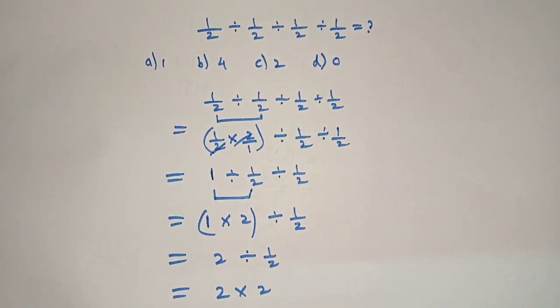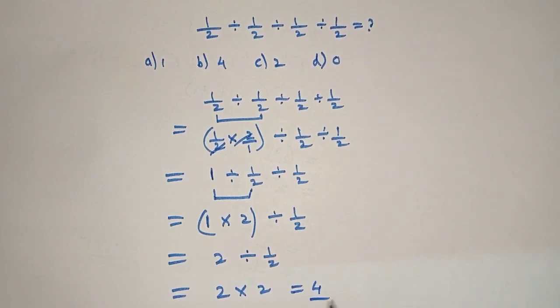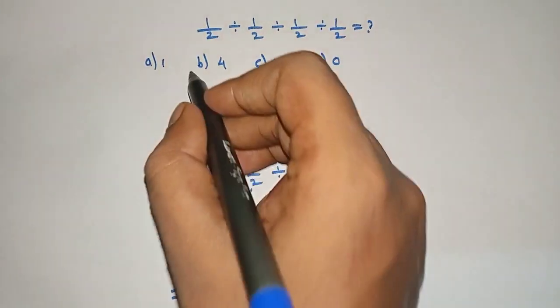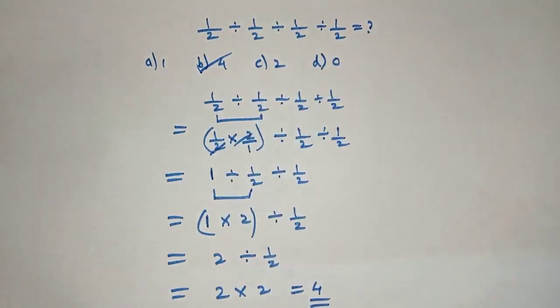So 2 into 2 is 4, which is our answer. Option B is correct. If you like my video, please subscribe to my channel. Thank you.